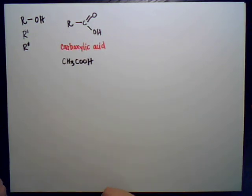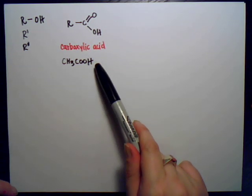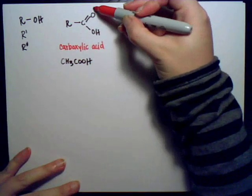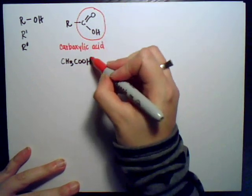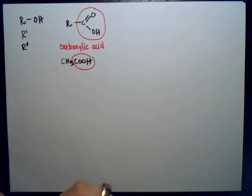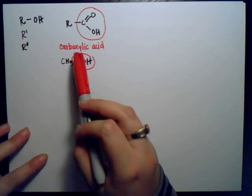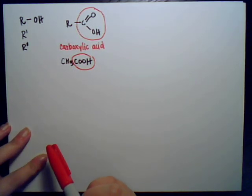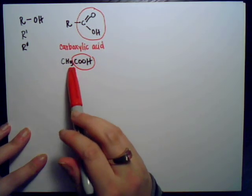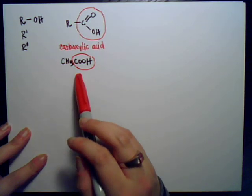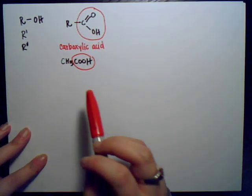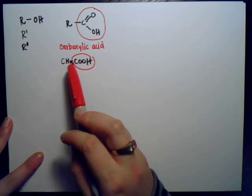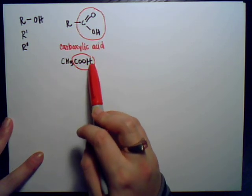The COOH is this portion of the molecule — that's a COOH. In this case, the R group is just a methyl group, but it could be anything: an ethyl group, a butane, anything. In this particular case, one of the simplest ones, acetic acid or vinegar, is just CH3COOH.